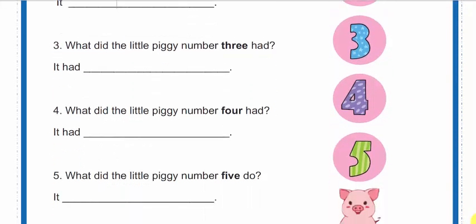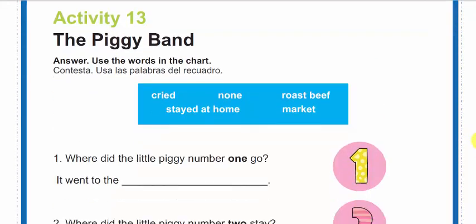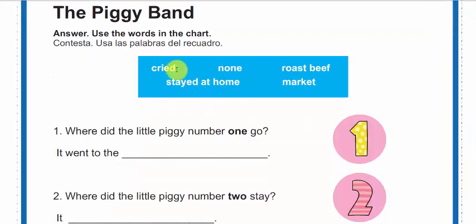What did the little piggy number three had? ¿Qué comió el puerquito número tres? It had... Tenemos otras opciones. ¿Cuál sería la más correcta? It had cry, it had none, it had roast beef, it had stayed at home, it had market.